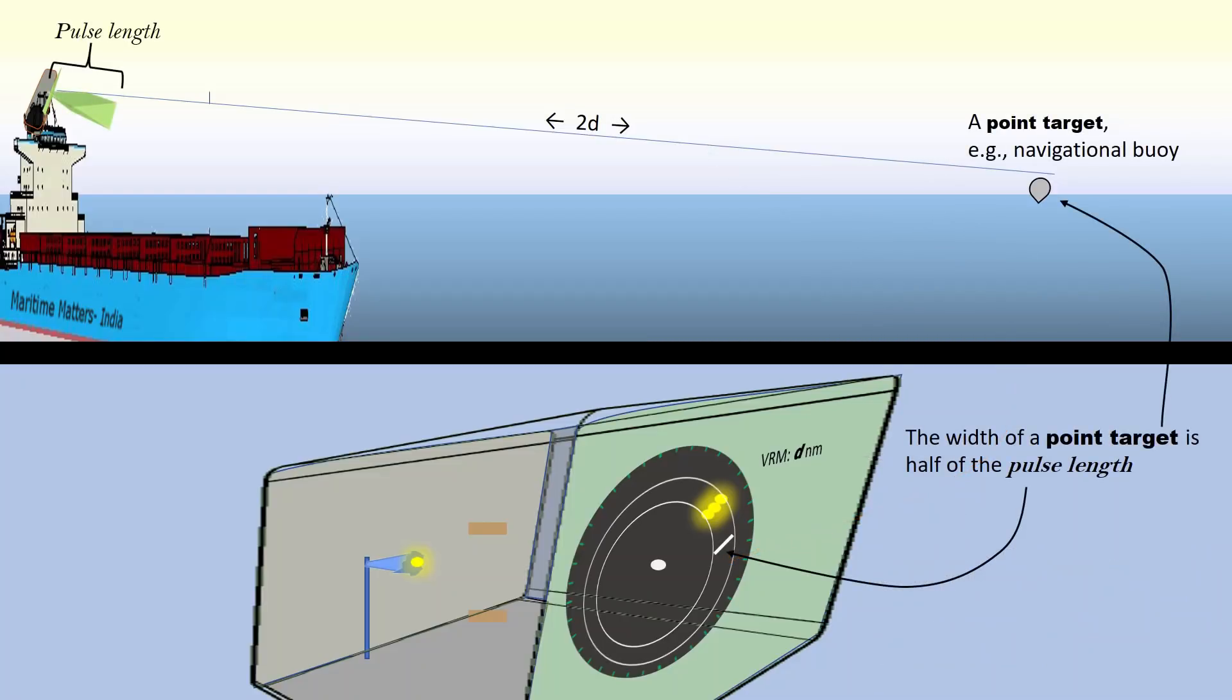It can be logically inferred that, for any point target such as a navigational buoy, the width of the paint on the PPI will be half of the pulse length.